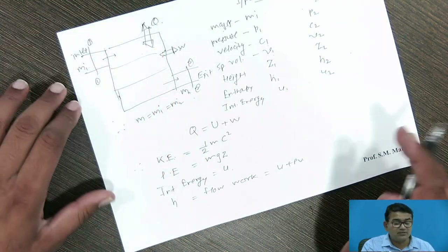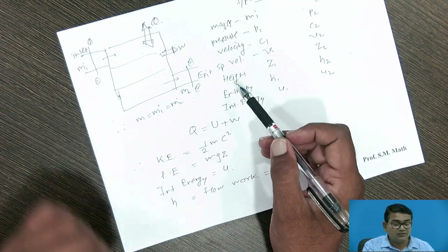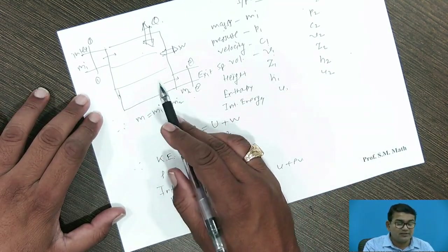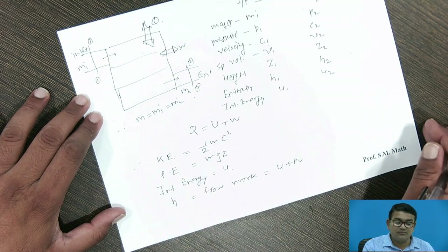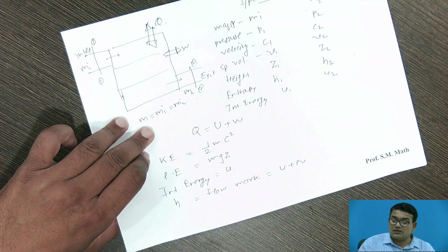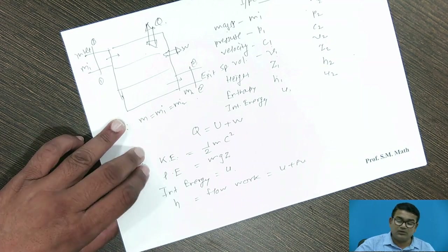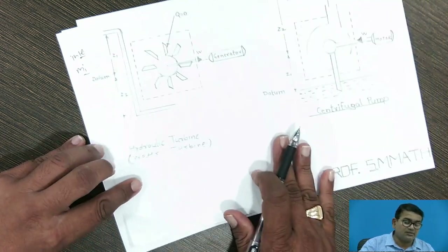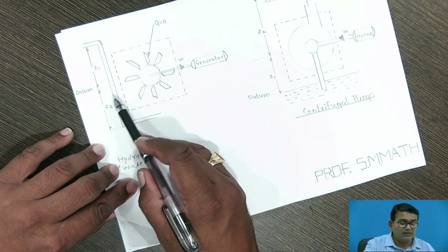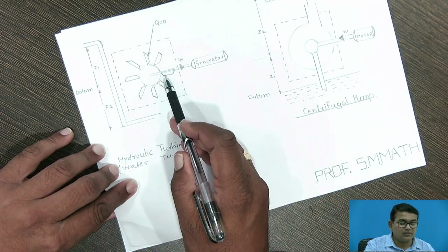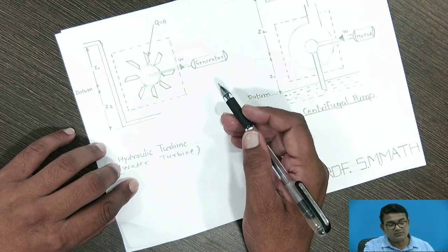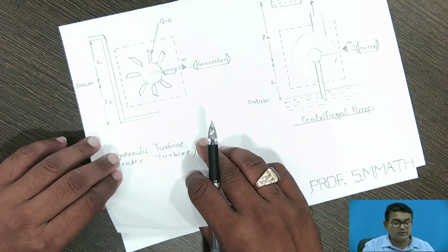When you know all these basic general equations — mass entering the system and mass leaving the system — now we apply them to the hydroelectric turbine. For this hydraulic turbine, when water enters the system and water leaves the system, it imparts its motion and you get work output from the system. We assume this work output is positive work.